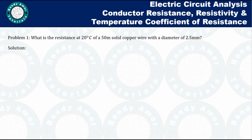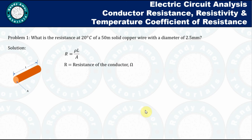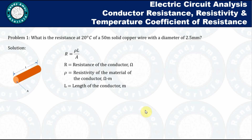Problem number one: what is the resistance at 20 degrees Celsius of a 50-meter solid copper wire with a diameter of 2.5 millimeters? If this is our conductor with length L and cross-sectional area A, the resistance is given by the formula R = ρL/A, where R is the resistance in ohms, ρ is the resistivity in ohm-meters, L is the length, and A is the cross-sectional area.